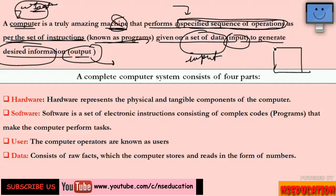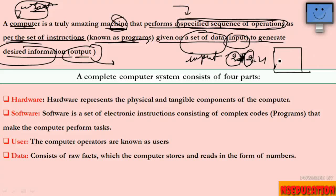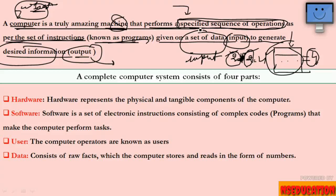Let me give you a small example using a calculator. If I want to add two numbers, I give input 2, then another input 2, and tell it to add them. When I do 2 plus 2, the calculator gives the answer 4. So computer is a truly amazing machine that performs a specified sequence of operations as per the set of instructions known as programs, given on a set of data to generate desired information.